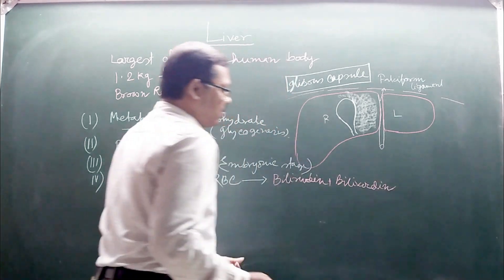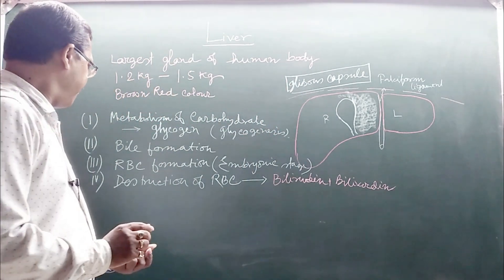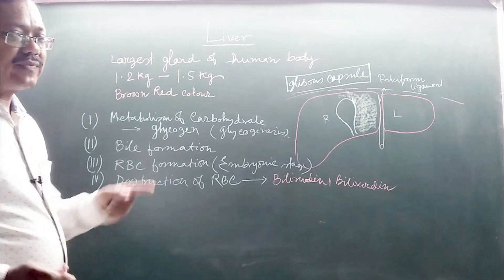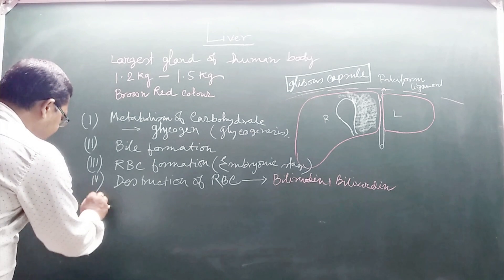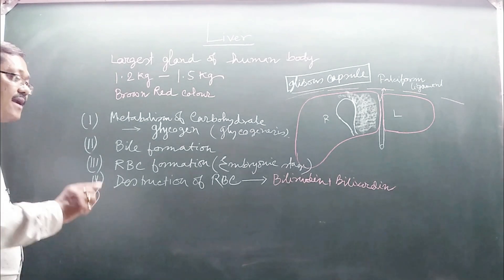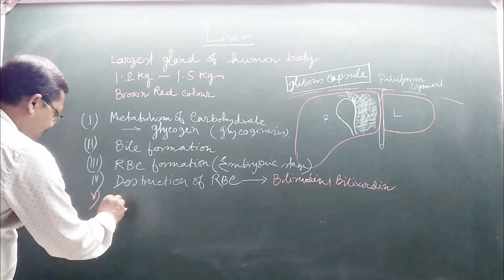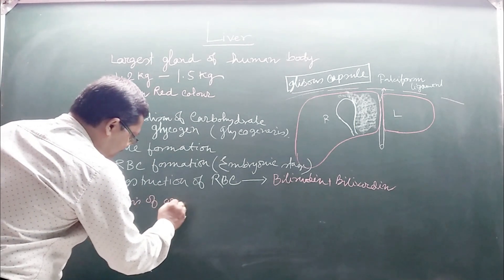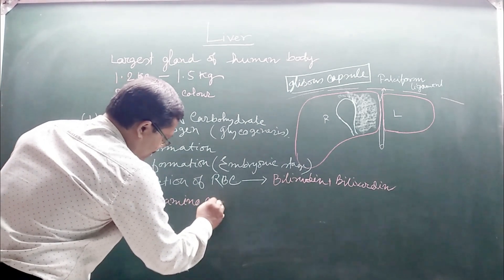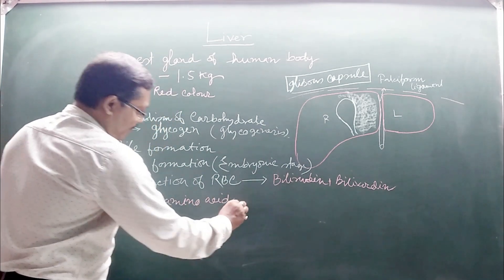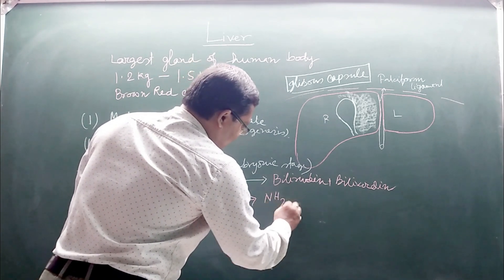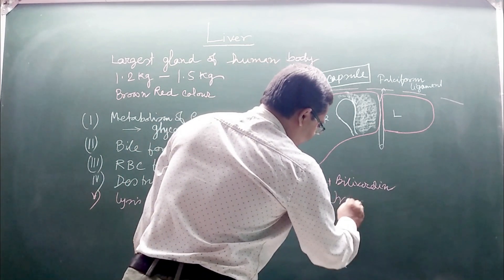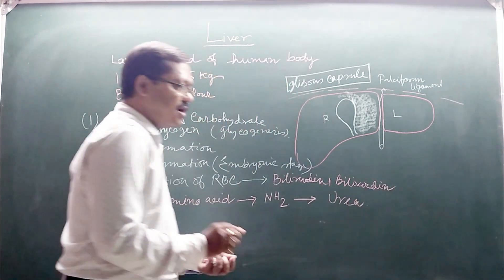Amino acids, when they enter the liver, are converted through a deamination process and produce ammonia. This ammonia is then used in the formation of urea — the urea cycle generally takes place in the liver.